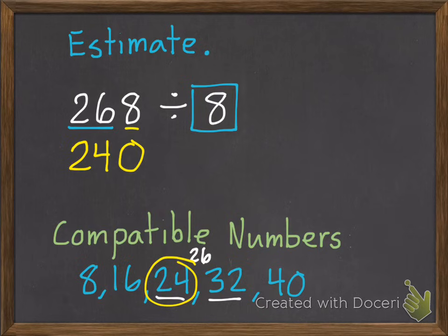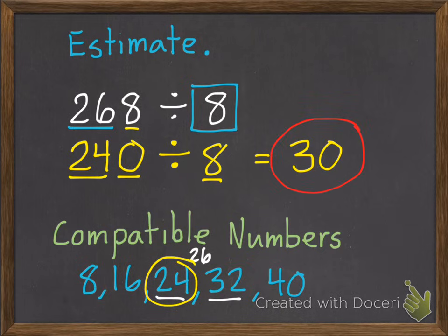Finish our place value spots. Turn them into zeros. So we're going to change 268 into 240. 240 divided by 8. 24 divided by 8 is 3 with a zero. So our answer is 30.